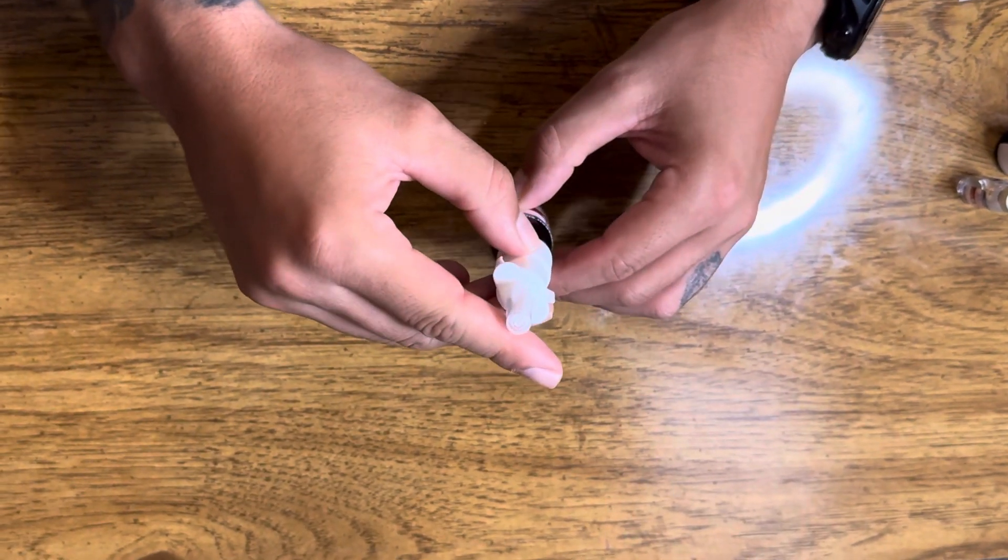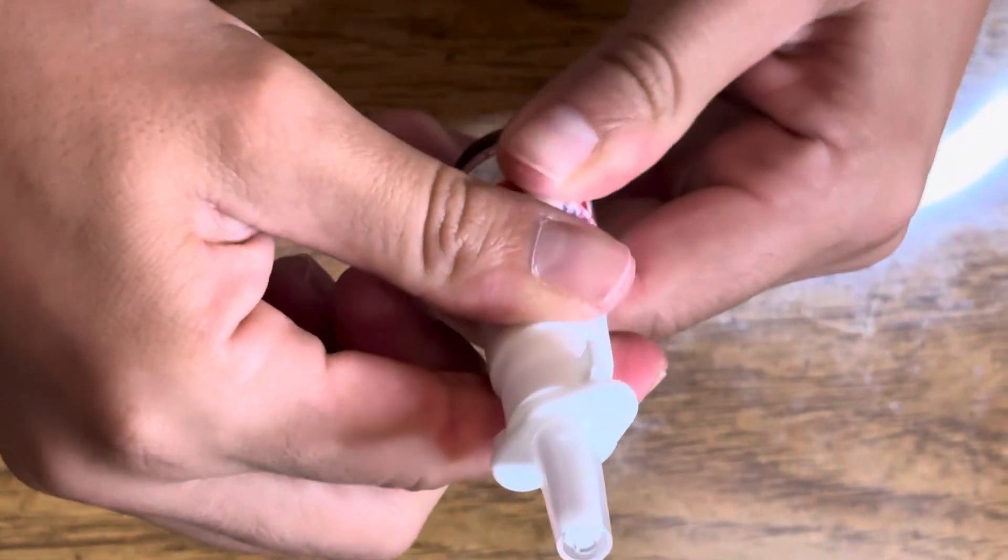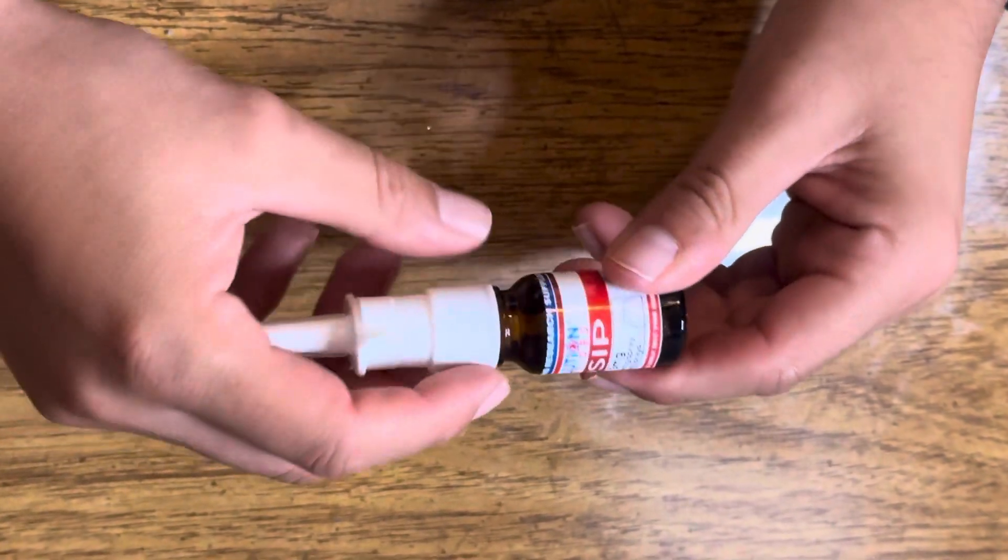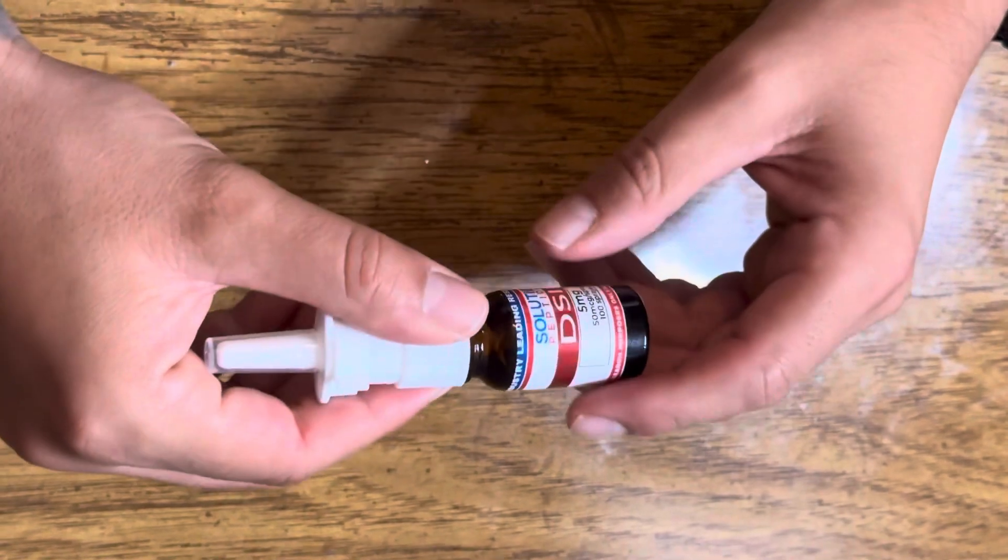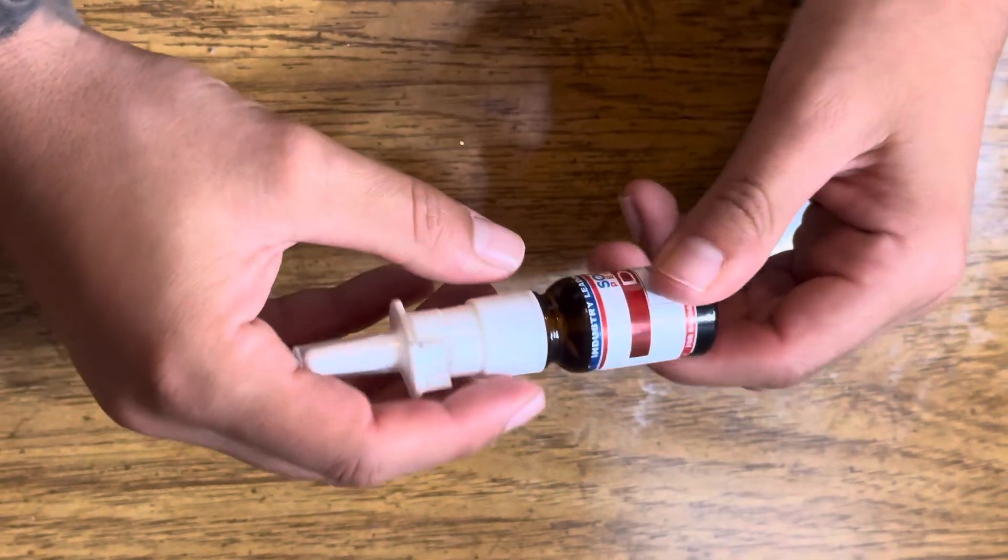The most important part that you are going to do for the next step is to cap your peptide. Make sure it's nice and tight and do another minute of swirling. And that is it. That is how you reconstitute nasal spray peptides.